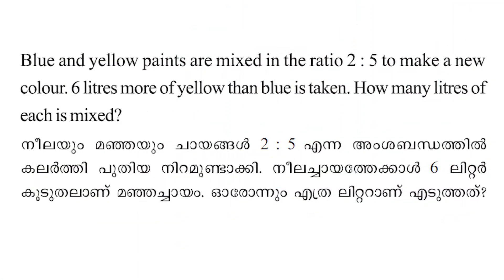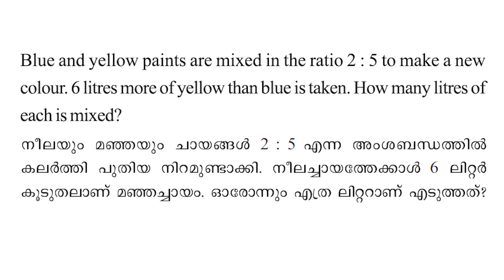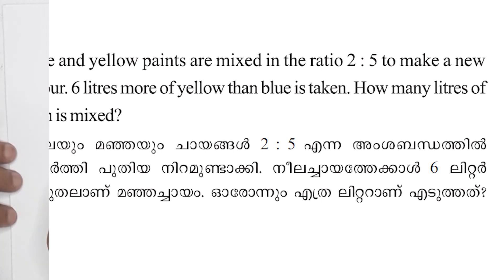Blue and yellow paints are mixed in the ratio 2 is to 5 to make a new color. 6 liters more yellow than blue is taken. How many liters of each is mixed? We have a paint — the color is mixed into a new color. Blue and yellow are mixed.